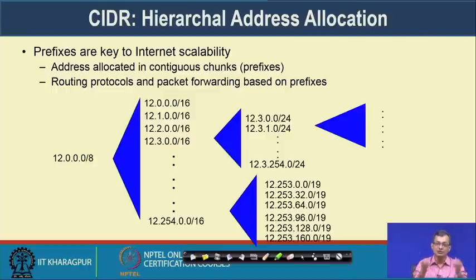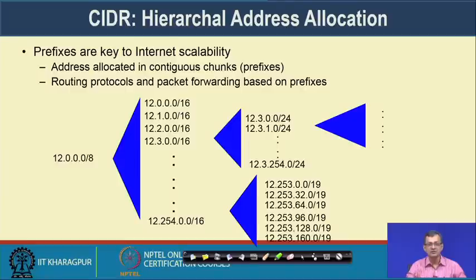Otherwise, every router would need to keep individual addresses for the rest of the world — similar to every post office keeping every individual address in India. Instead, if sending something to IIT Kharagpur, it is West Bengal, a particular district, city, area, and then the specific location. Similarly in IP, we divide into this hierarchical structure. These concepts from IP address allocation can be utilized for routing.